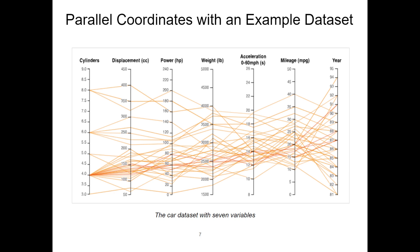Starting with the top left of the image, we can read from left to right. For example, the first three car models have eight cylinders. And then, if we follow the top edge, we can see the first car has 400 displacement value. If we continue tracing this edge, the power value is 160, the weight value is 4000, and the acceleration value is 14.